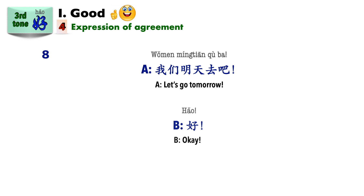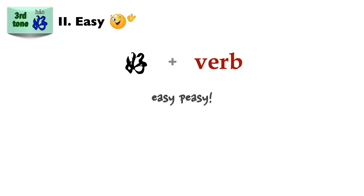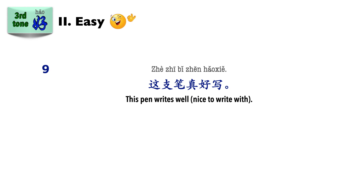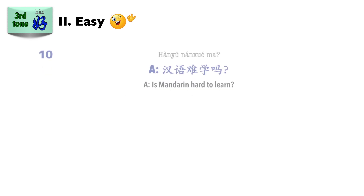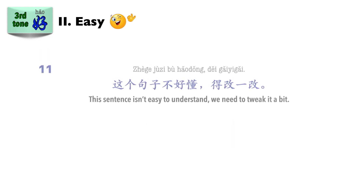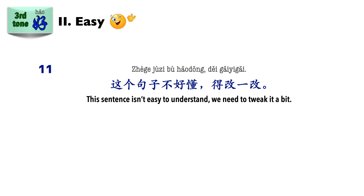Let's move on to the second meaning of 好: Easy. Placed in front of verbs, it indicates that something is easy to do. The opposite is 不好 or 难. For example: 这支笔真好写 — 'This pen is really easy to write with.' 汉语难学吗? — 不难学，很好学 — 'Is Chinese hard to learn? Not hard to learn, very easy to learn.' 这个句子不好懂，得改一改 — 'This sentence is not easy to understand, it needs to be revised.'